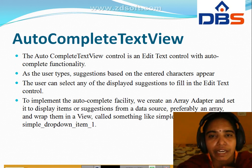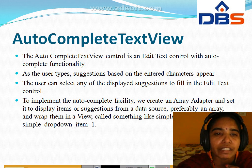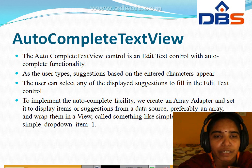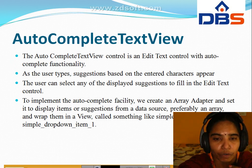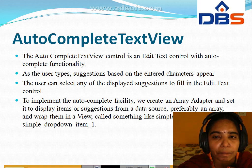This control is an edit text control with auto complete functionality. Here in this auto complete, the user types and based on the entered characters, the user can select from the displayed suggestions to fill in the edit text control. To implement the auto complete facility, we create an array adapter to display the items or suggestions from the data source. This view is called simple list item 1 or simple drop down item 1.